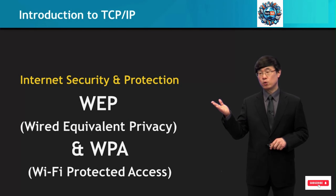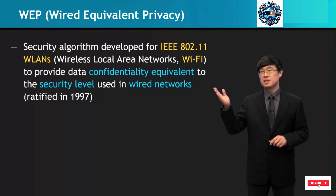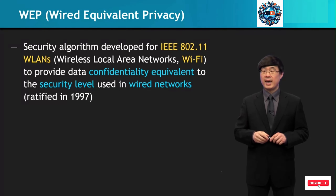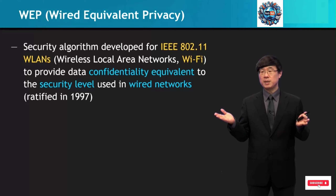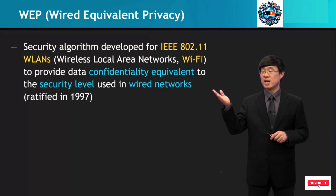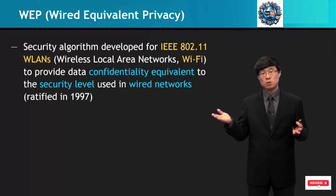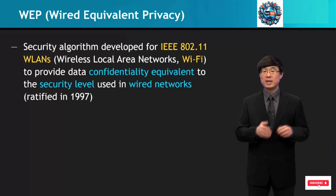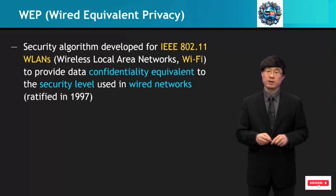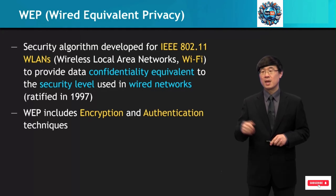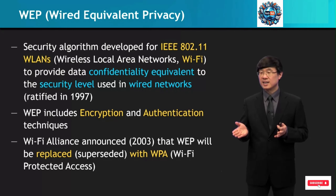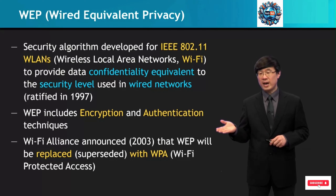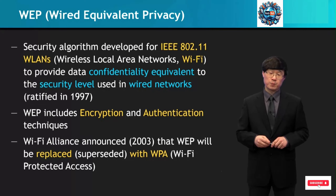Now let's study about Wired Equivalent Privacy. This is a security algorithm developed for 802.11 wireless local area networks, and this includes Wi-Fi. WEP was designed to provide data confidentiality equivalent to the security level used in wired networks, which is where the name came from. WEP includes encryption and authentication techniques. The Wi-Fi Alliance announced that WEP would be replaced with WPA, Wi-Fi Protected Access, in 2003.